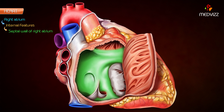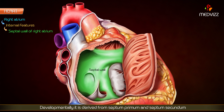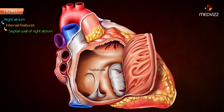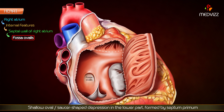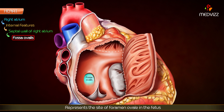The right atrium also presents a septal wall. Developmentally, it is derived from the septum primum and septum secundum. When viewed from within the right atrium, the septal wall presents the following features: the fossa ovalis, which is a shallow oval saucer-shaped depression in the lower part formed by the septum primum.